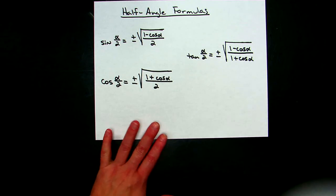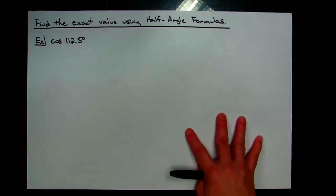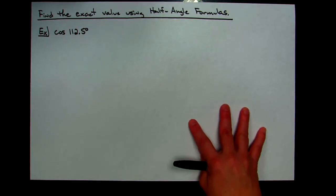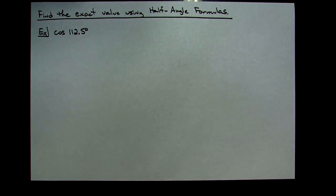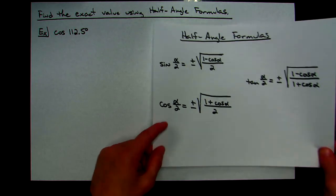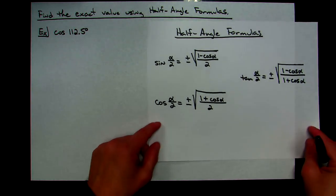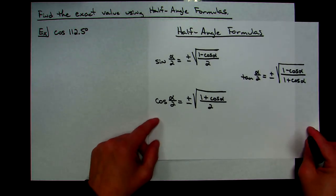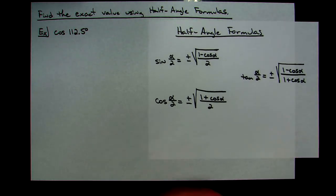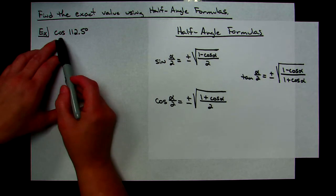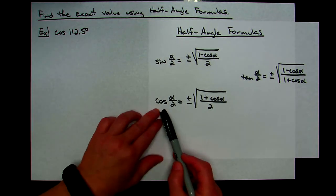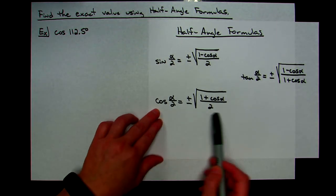Now let's work out an example. We need to find the exact value using a half-angle formula for the cosine of 112.5 degrees. We're not using a calculator — we'll use the unit circle at some point. Since we're finding cosine, I'm going to pick the cosine formula.